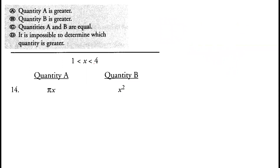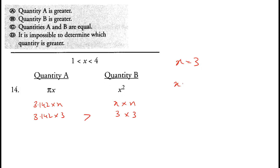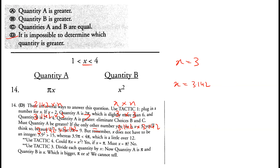X is between 1 and 4. Quantity A is πx (approximately 3.142x) and quantity B is x². If x = 3, quantity A is 9.426 and quantity B is 9, so quantity A is greater. But if x = 3.142 (which is between 1 and 4), both equal 3.142 × 3.142, making them equal. Since outcomes vary, we can't determine which is greater. Option D is correct.